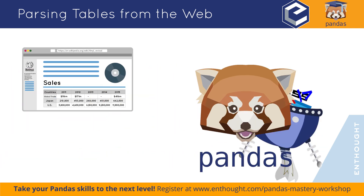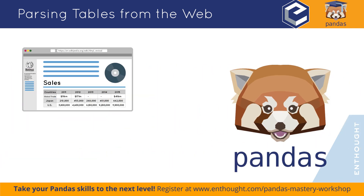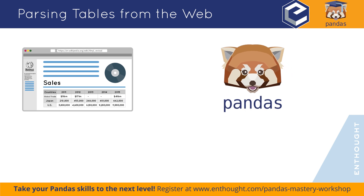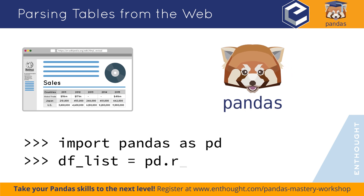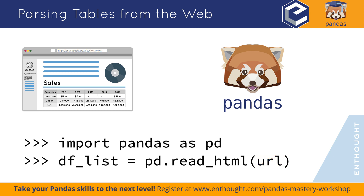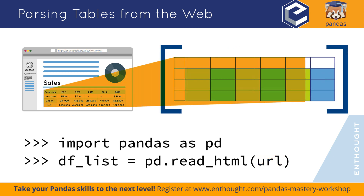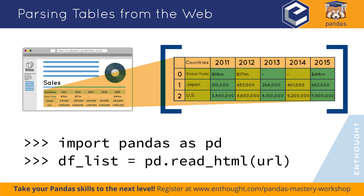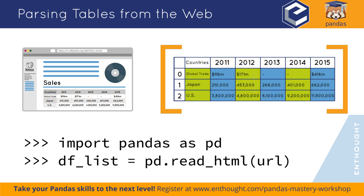Or, I could just use Pandas. With Pandas, I can get all the tables with a single function called read_html. I specify the page's URL, and the function will take care of downloading the web page, parsing the content, and creating the DataFrames. It'll return a list of DataFrames, one for each table on the page.